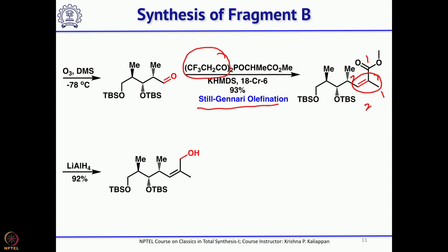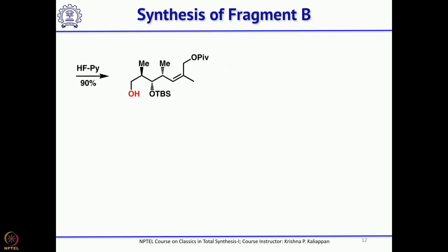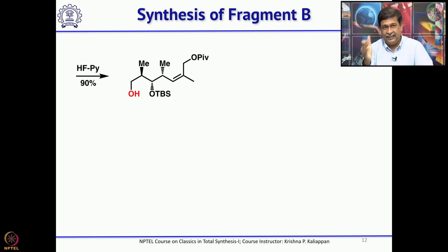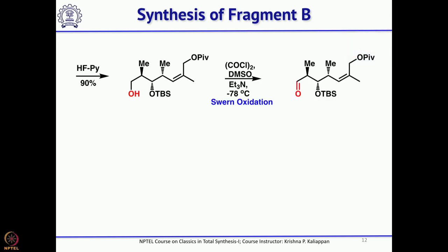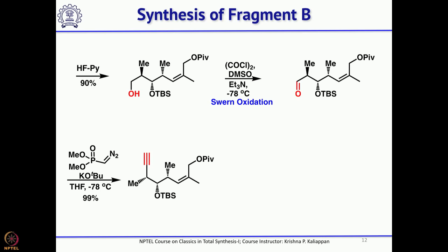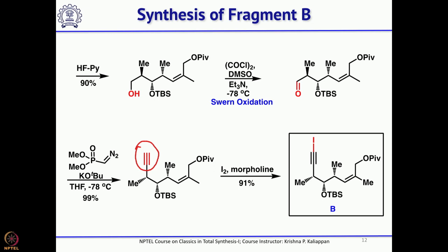The ester was then reduced with lithium aluminum hydride to give the corresponding alcohol, which was protected as a pivalate ester. The primary alcohol protected as TBS ether was selectively removed with HF-pyridine to give the primary alcohol, which was oxidized under Swern conditions to give the aldehyde. The aldehyde was homologated using the Bestmann-Ohira reagent to give the triple bond, which upon treatment with iodine in the presence of morpholine gave fragment B.